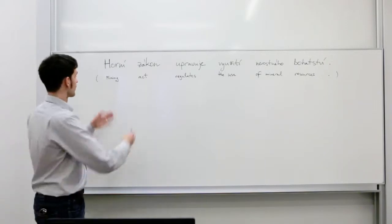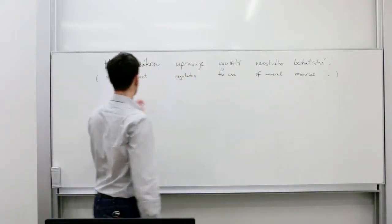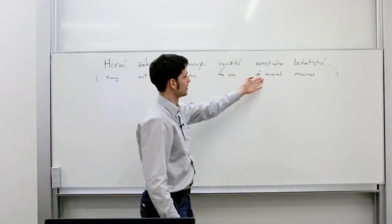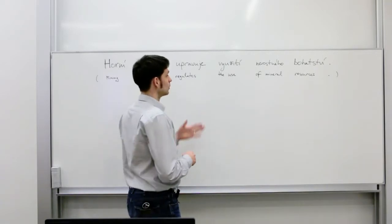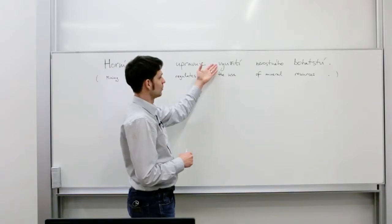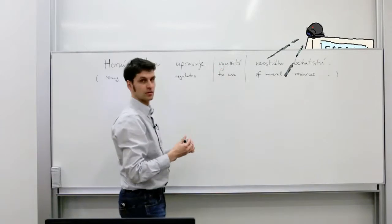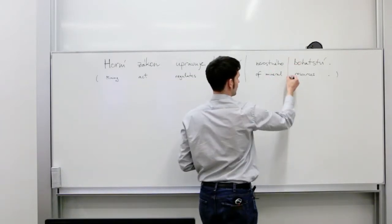Let's have a look at this example. Horní zákon upravuje využití nerostného bohatství. Here is the English gloss. Mining act regulates the use of mineral resources. Obviously, word-for-word translation wouldn't quite work because Czech doesn't have any articles. But if we allow to translate využití as the use, then this would be a good phrasal translation.